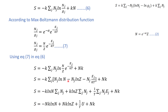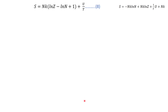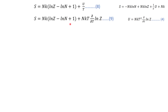Simplifying further: the summation of nj gives the total number of particles N, and nj times ej gives the total energy U. Rearranging and taking Nk as a common factor, we have log Z minus log N, which gives equation number eight. So we can express entropy in terms of the partition function. Since internal energy U is also a function of Z, we can write entropy in the functional form given by equation number nine.